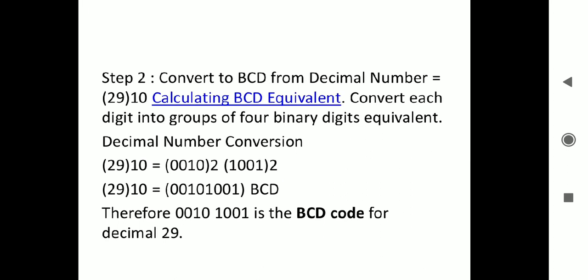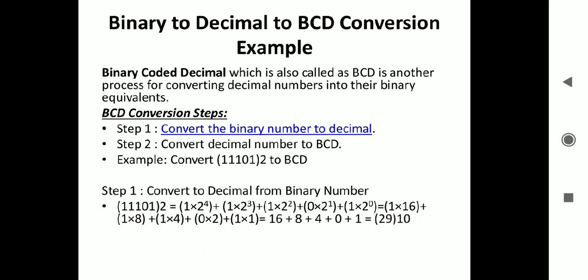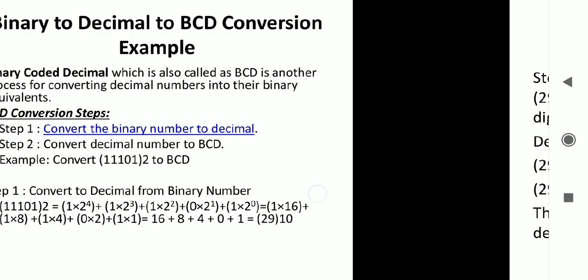The decimal equivalent of that number is 29. Decimal 29, so 2 and 9. 2 conversion again: 0010 in 4-digit form. 9 is 1001. So 00101001 is the BCD number of decimal 29 or BCD of 11101 binary.